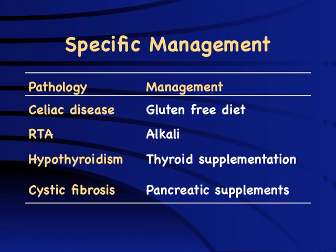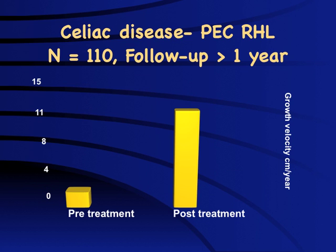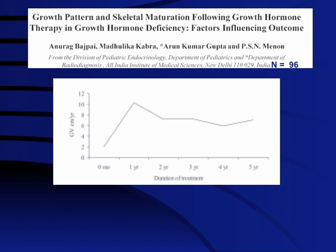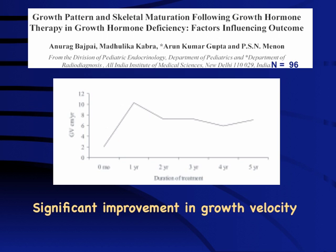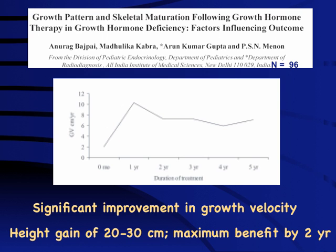Once a diagnosis of growth failure is established, specific management becomes straightforward. For celiac disease, simply stopping wheat intake produces a dramatic response. Similarly, alkali for RTA and thyroid replacement produce dramatic improvement. In our 110 cases of celiac disease, growth velocity increased from around 2 cm per year to 12-13 cm per year. Growth hormone therapy is highly effective, improving growth from around 2 to 12 cm per year with a total height gain of approximately 20-30 cm, with maximum benefit by around two years of therapy. Children should have a minimum of two years of therapy, continuing until bones are fused.